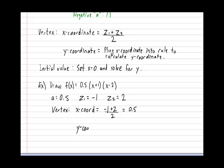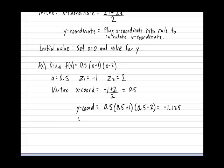Next, for the y-coordinate, it's just a simple matter of taking the x-coordinate, plugging it back into our rule, and spitting out the y-coordinate. So let's do it. Our rule is 0.5 multiplied by (0.5 + 1) multiplied by (0.5 - 2), and that will give us a y-coordinate of negative 1.125. Therefore, our vertex is located at (0.5, -1.125).